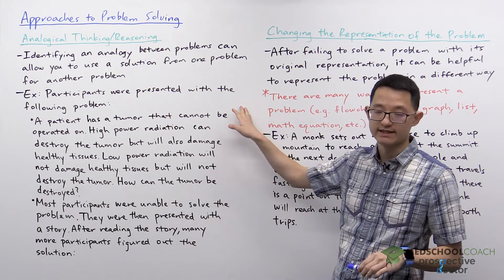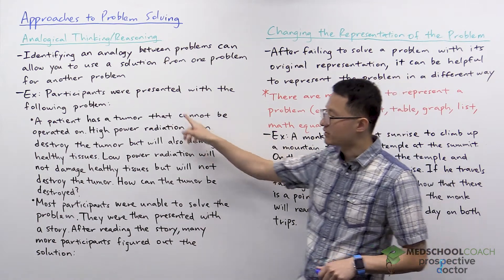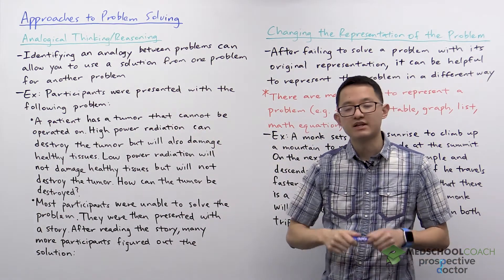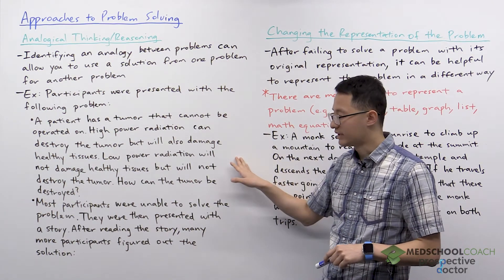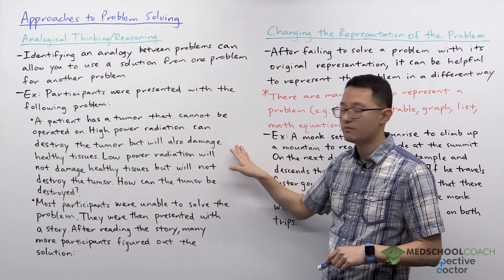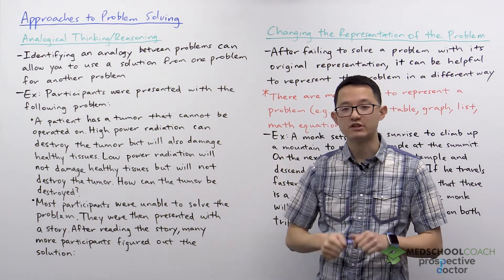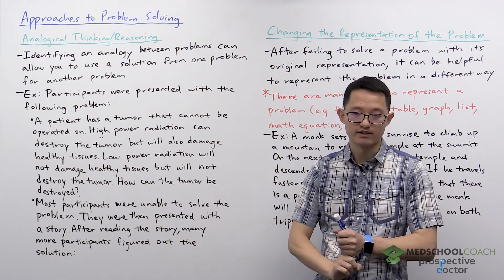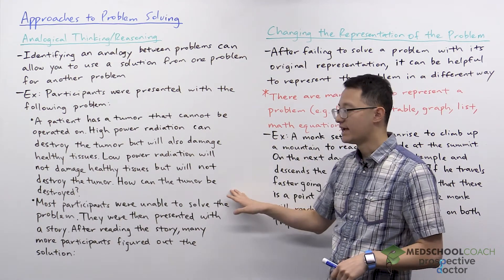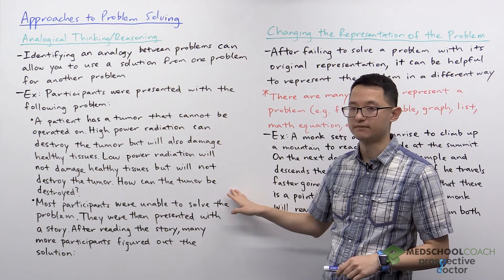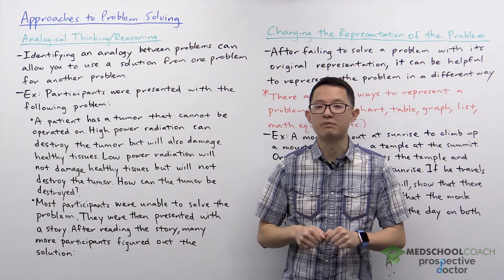This was a study done in the 1980s by two psychologists, Gick and Holyoak. Participants were presented with the following problem: a patient has a tumor that cannot be operated on. High power radiation will destroy the tumor, but will also damage healthy tissues surrounding it. If you use low power radiation, it won't damage the healthy tissues, but it also will not destroy the tumor. So the question is, how can the tumor be destroyed? Most participants were unable to come up with a solution.